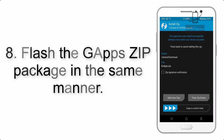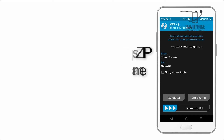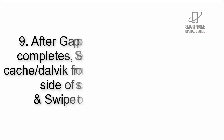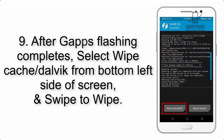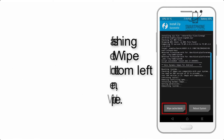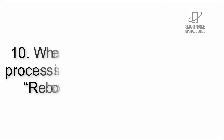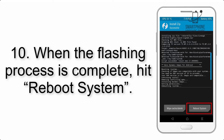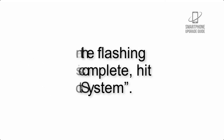Step 8: Flash the GApps zip package in the same manner. Step 9: After GApps flashing completes, select Wipe Cache and Dalvik from the bottom left side of the screen and swipe to wipe. Step 10: When the flashing process is complete, hit Reboot System.